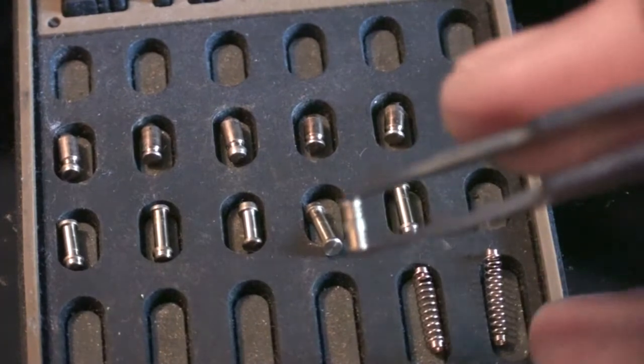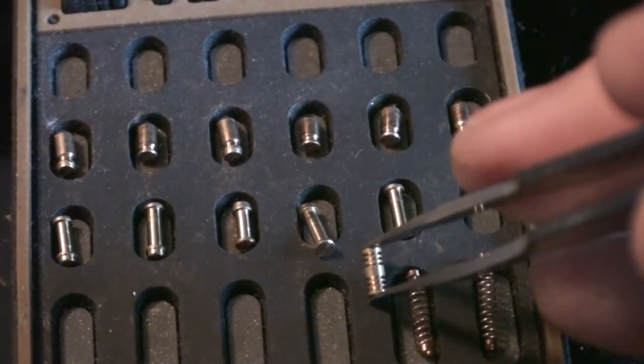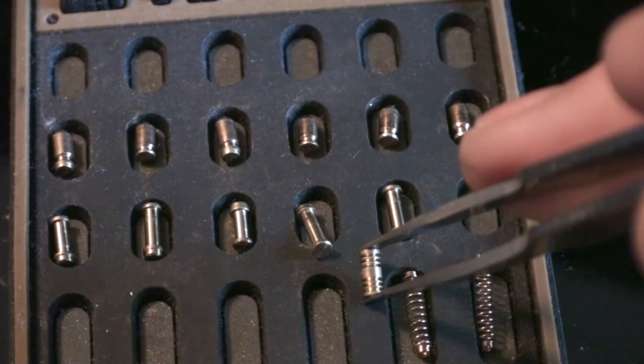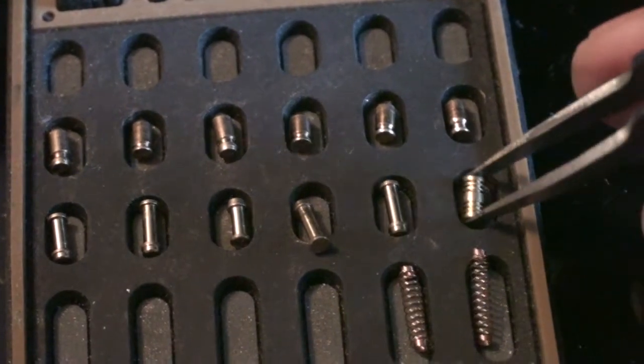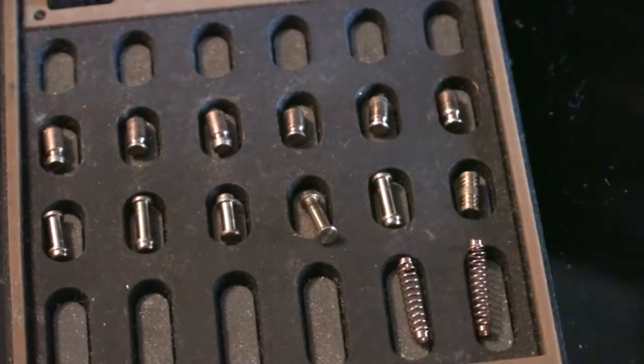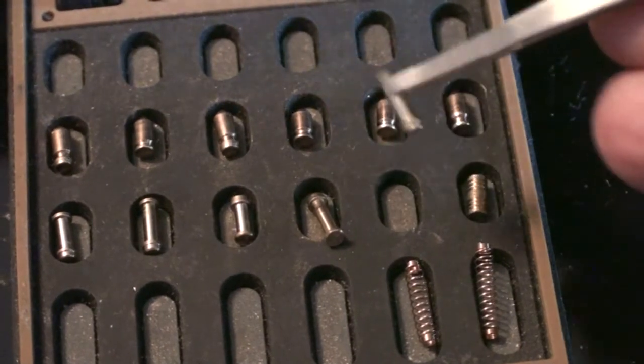Check out this. This is the Abus multi-serrated pin number six. It's exactly the same thing they put in the new C73. And it's in this Abus EC750 extra class.